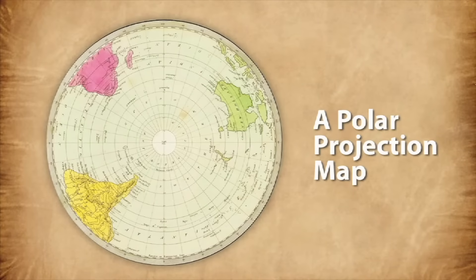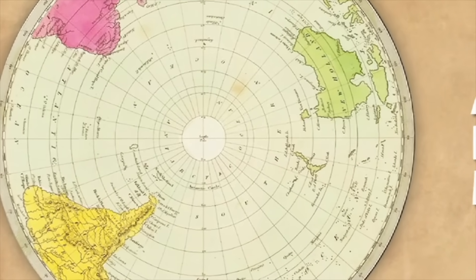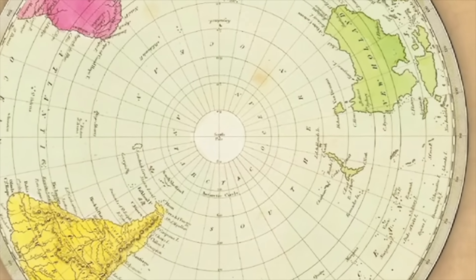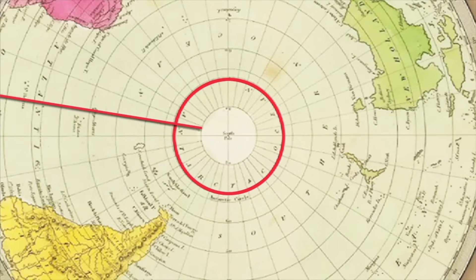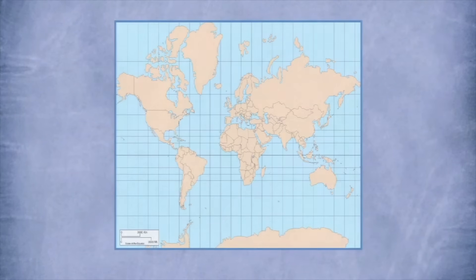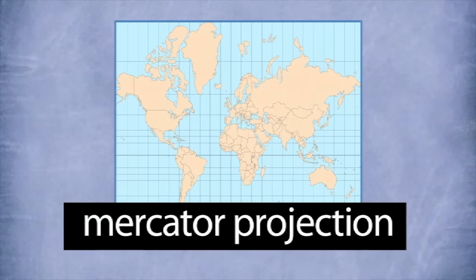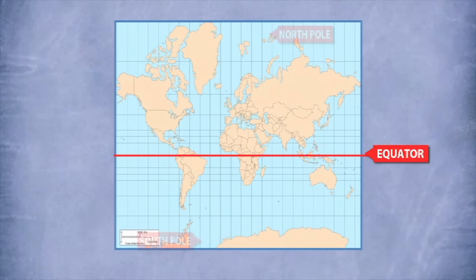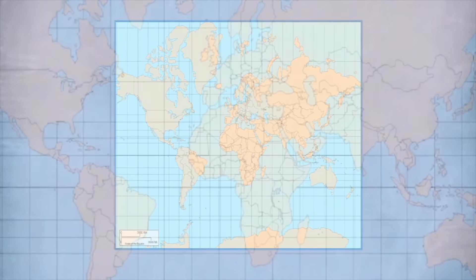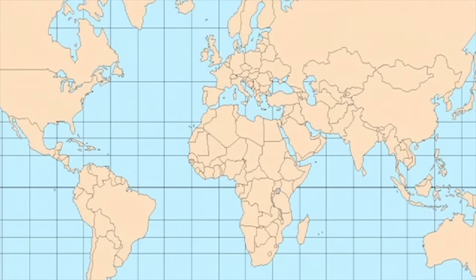The second is called a polar projection map. Unlike most maps, the center of this map is the north or south pole. Notice the lines of longitude are straight, while the latitude lines are circles. The third type of projection map is called a Mercator projection. It gives a good view of land near the equator, but the size of the land near the poles is distorted. However, like a simplified map, both the latitude lines and longitude lines are straight.